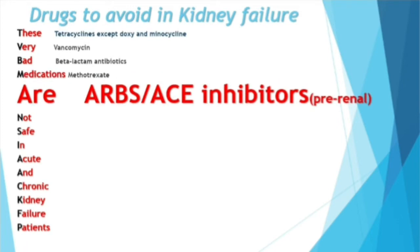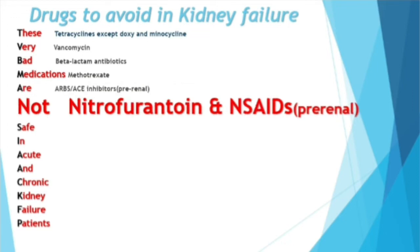'R' and 'S' stand for angiotensin receptor blockers and ACE inhibitors, because they decrease renal blood flow and lead to a pre-renal type of renal injury. 'N' is for NSAIDs, which can also lead to decreased renal blood flow and pre-renal injury, as well as nitrofurantoin, which is an antibiotic that leads to renal injury.